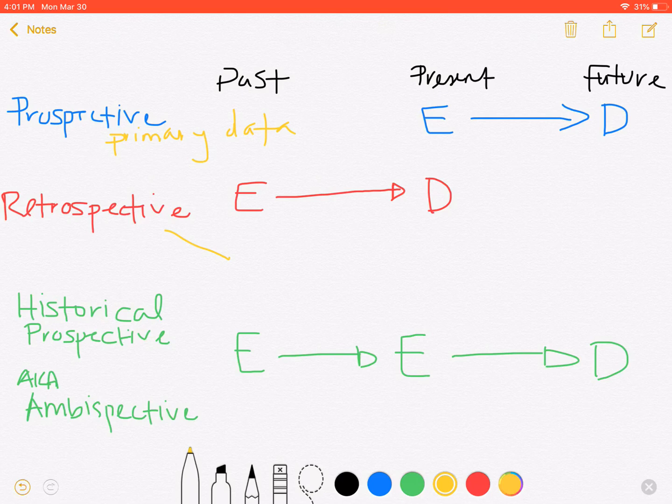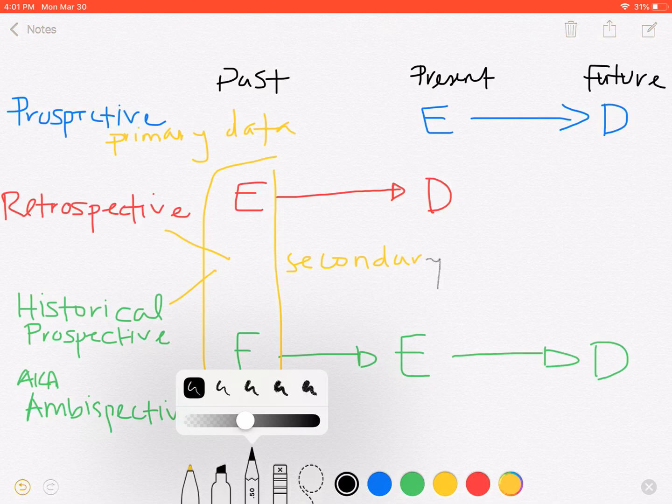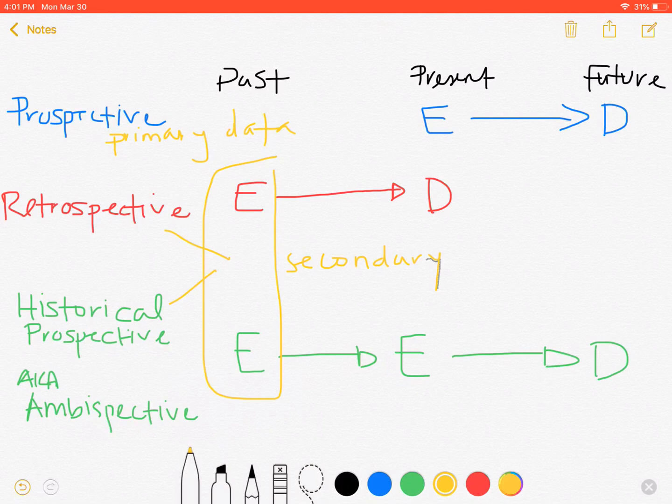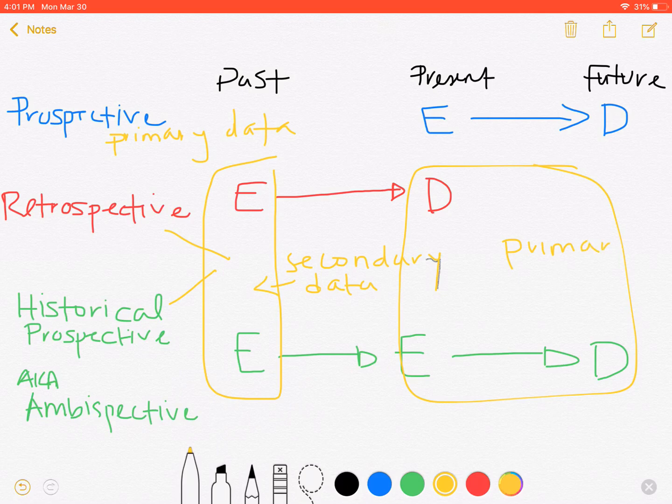Now, retrospective studies use a combination of primary and secondary data, as well as historical perspective. Both of these past exposures back here typically rely, well, they have to rely on secondary data. We have to have some type of secondary data available to us to establish whether or not you were exposed. However, they also combine that with, typically speaking, primary data for these elements of the study. So it's a combination of secondary data for the historical part and then primary data for the stuff that's happening today.